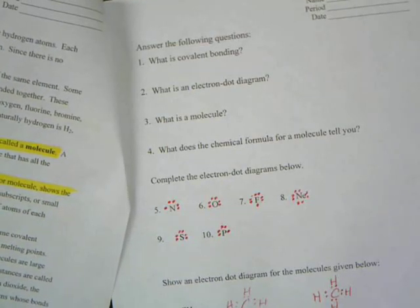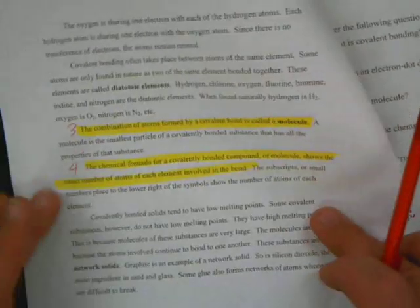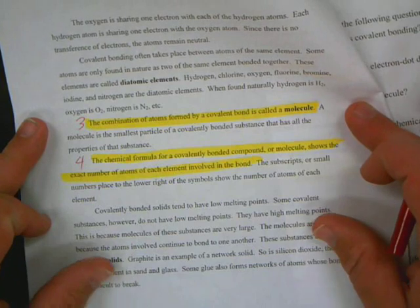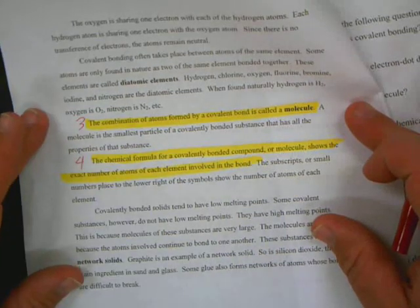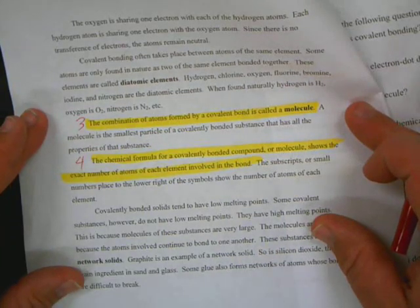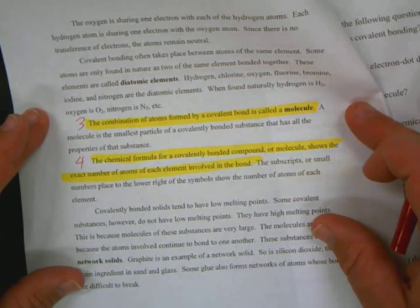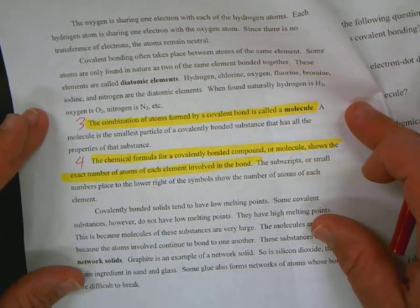And then, what does the chemical formula of a molecule tell you? Look over here again. First sentence of this paragraph says the chemical formula for covalent bonding compound, or molecule, shows the exact number of elements involved in the bond. As in H2O, how many H's are there? Two. How many O's are there? One. That's all there is to it.